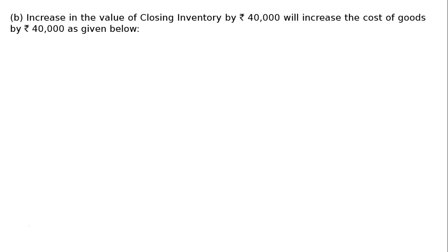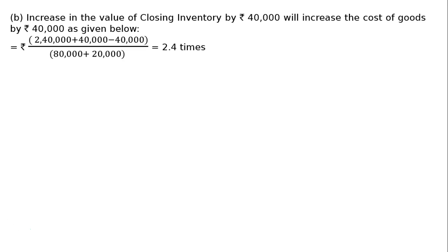Part B: increase in the value of closing inventory by rupees 40,000. An increase in closing inventory by 40,000 increases cost of goods sold in the numerator by 40,000, but also reduces it by 40,000 since closing inventory is deducted to find cost of goods sold — so there is no change in the numerator. However, the denominator increases by half of 40,000, giving 2.4 times, hence this will decrease the ratio.